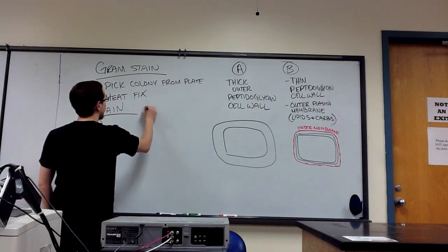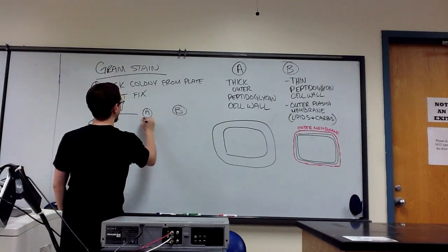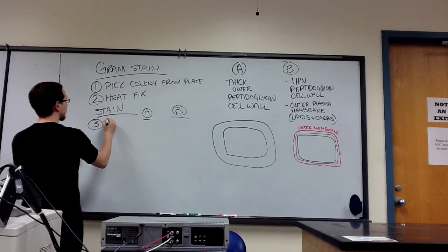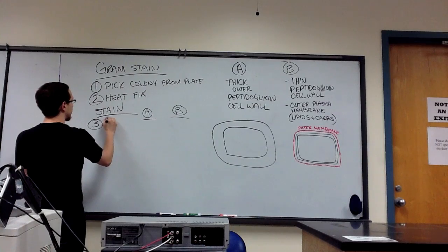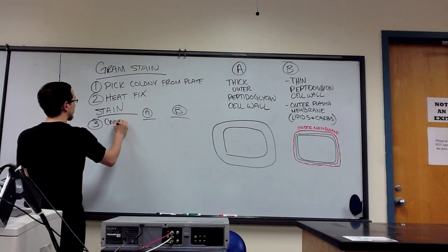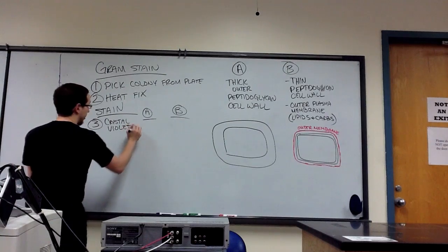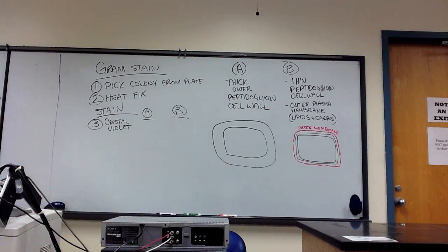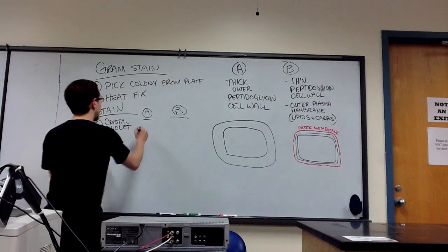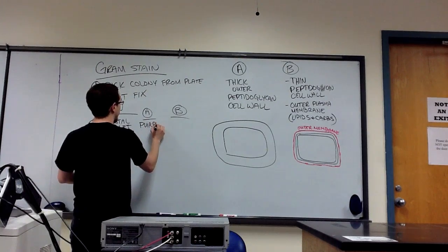Here's A, and here's B, so we can see what color they're turning. The first stain or solution you'll use in this particular procedure is called crystal violet. As you expect, this particular solution is purple in color and it stains both cells purple.